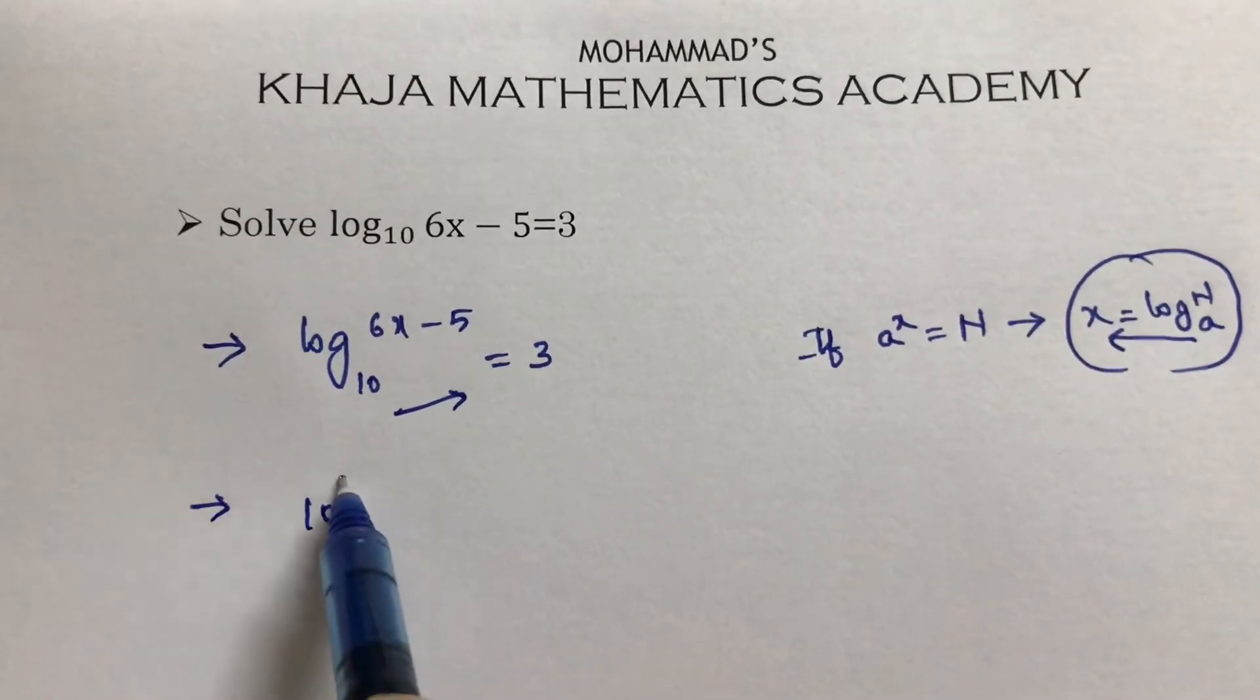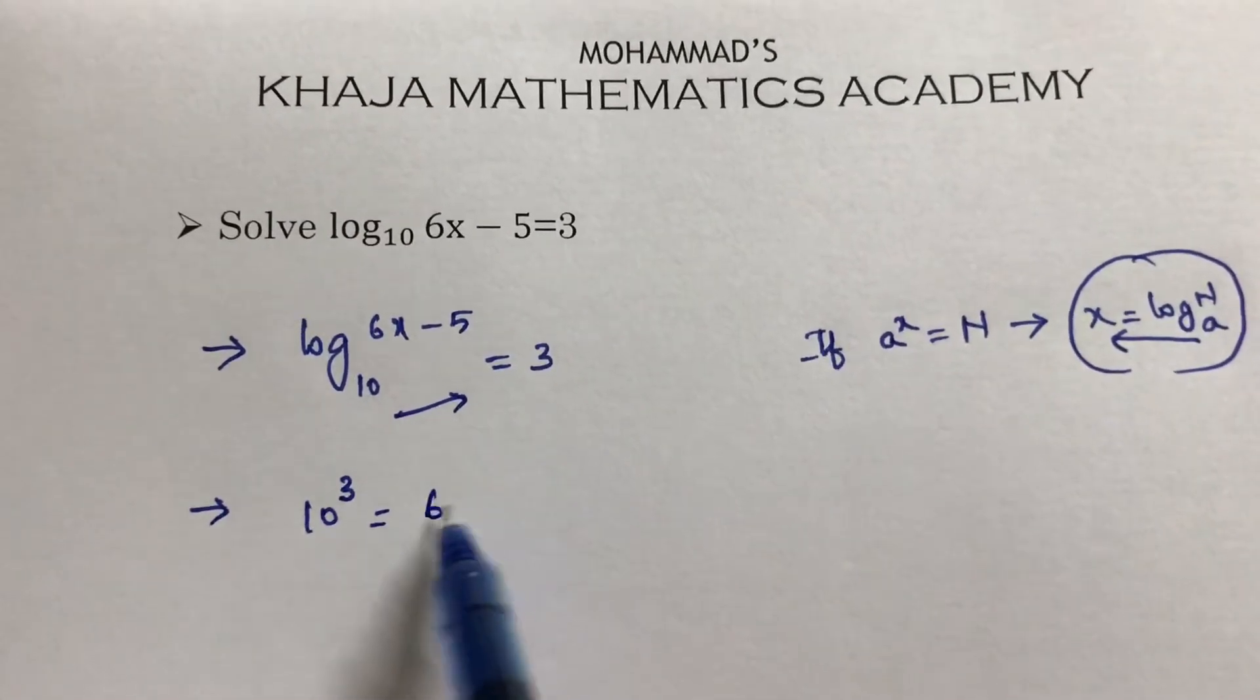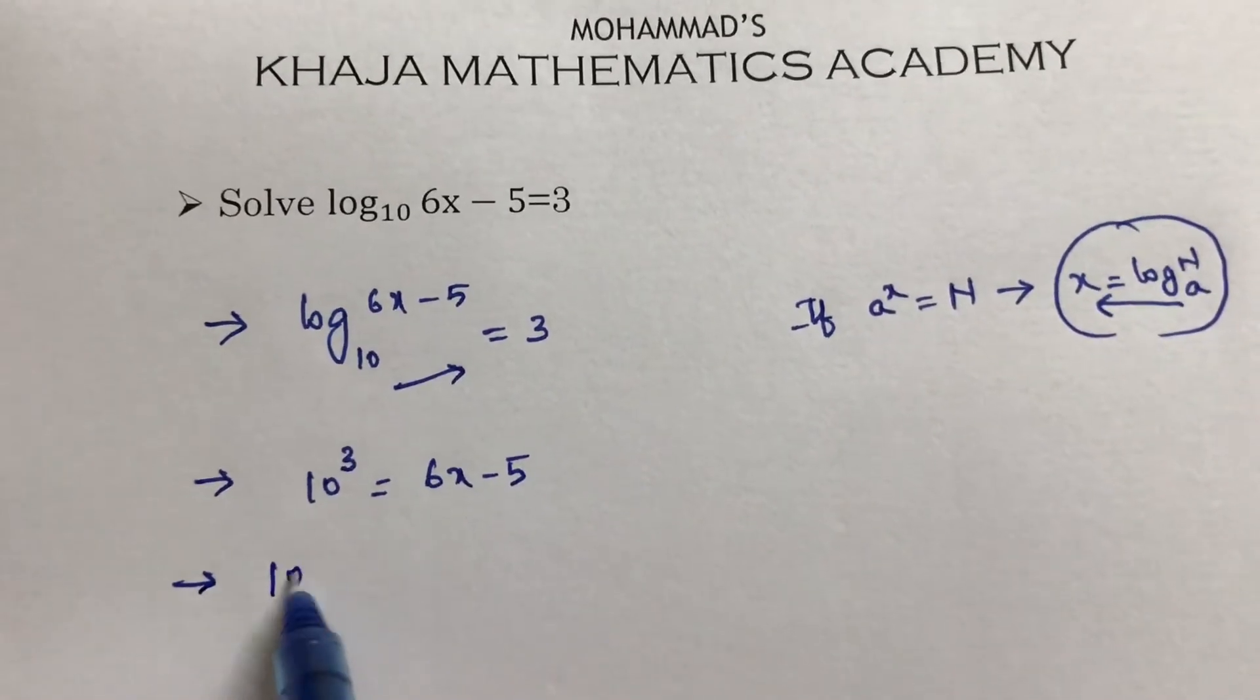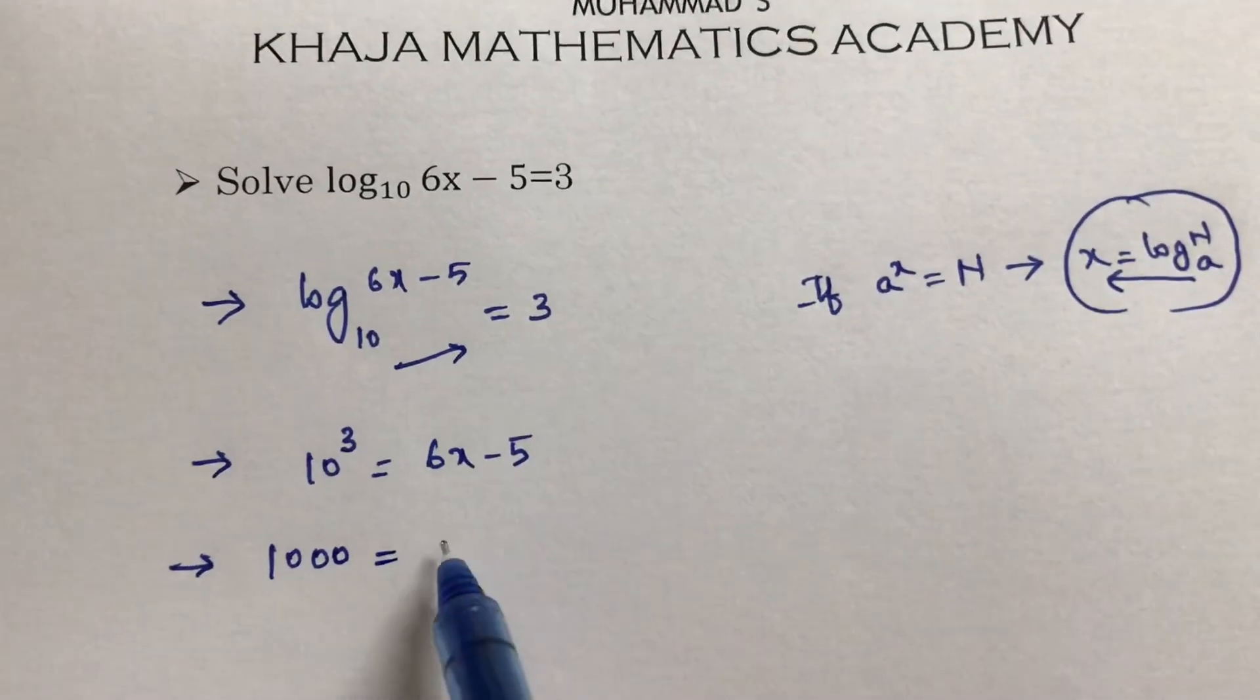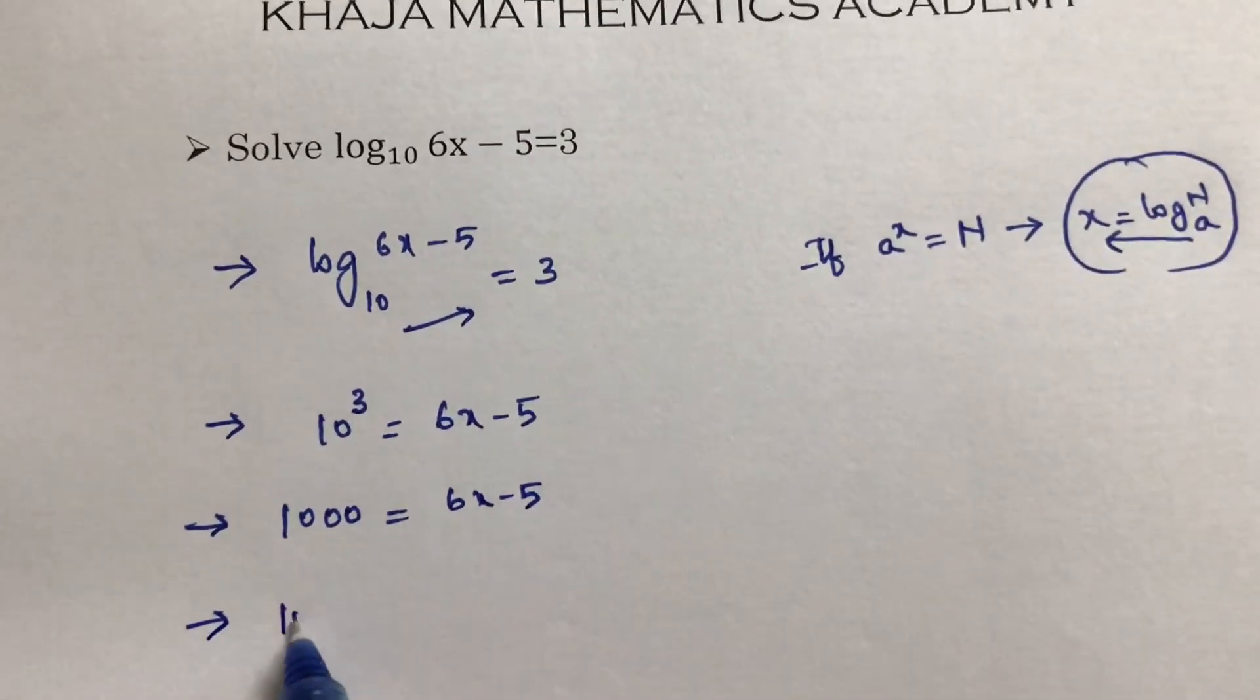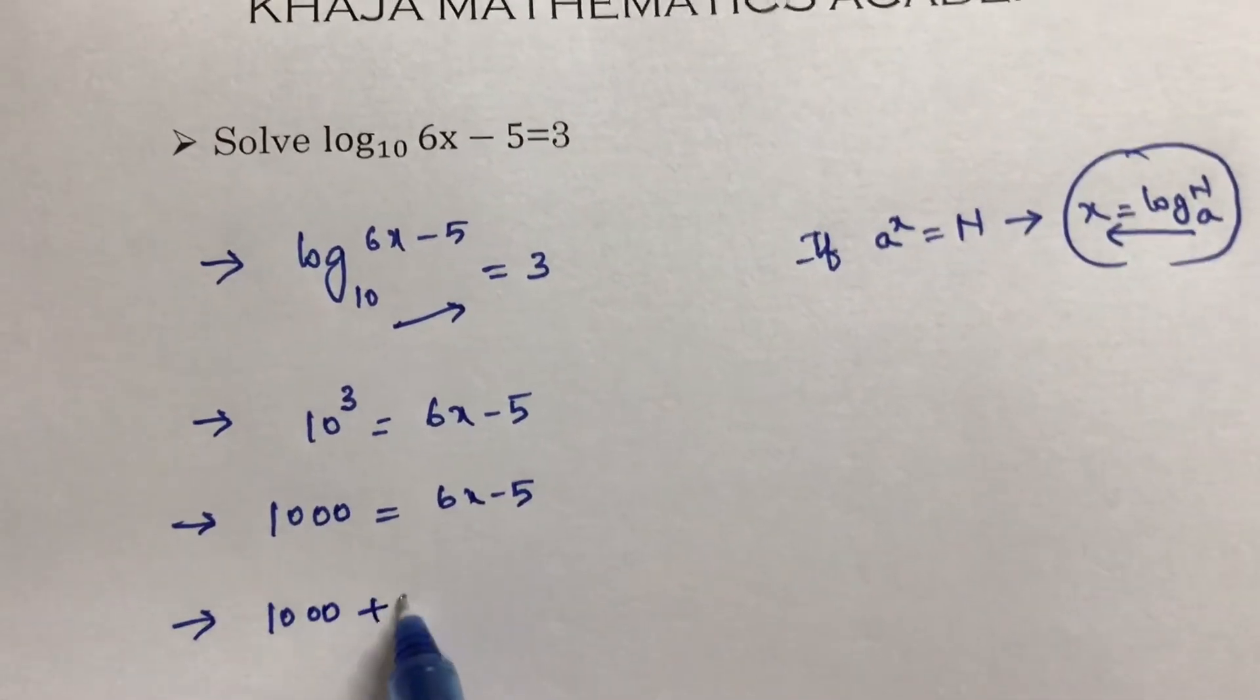10³ = 6x - 5. 10³ is 1000, so 1000 = 6x - 5. Therefore, 1000 + 5...